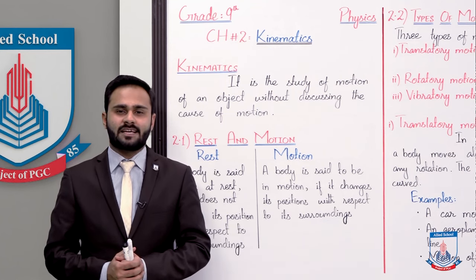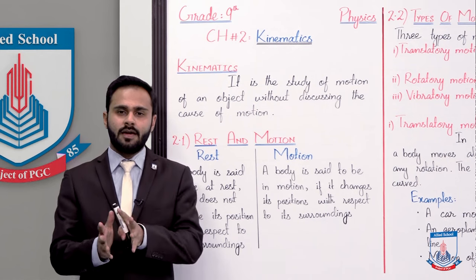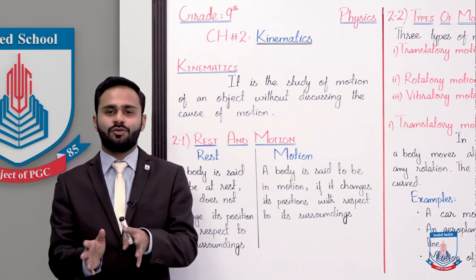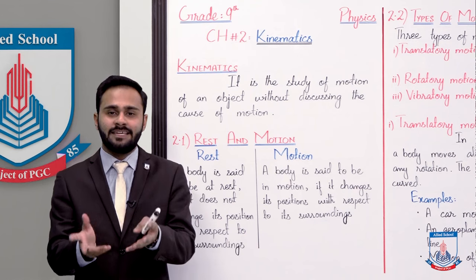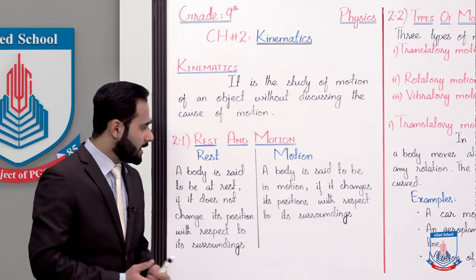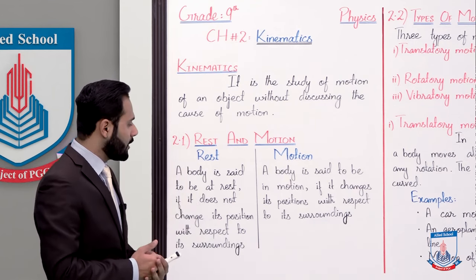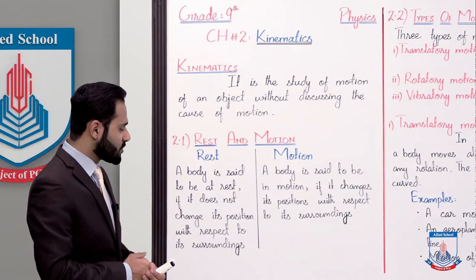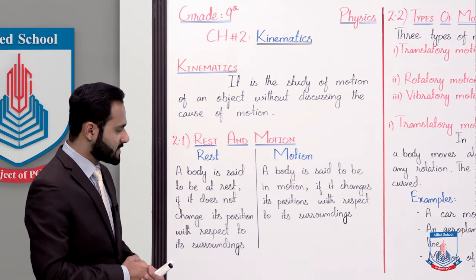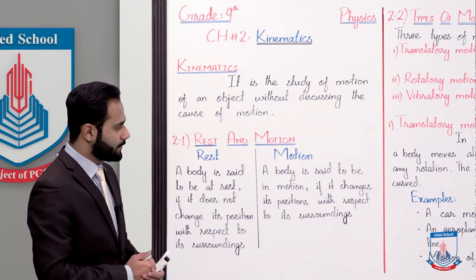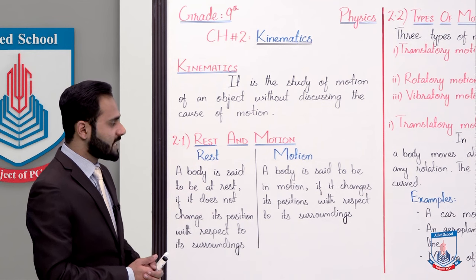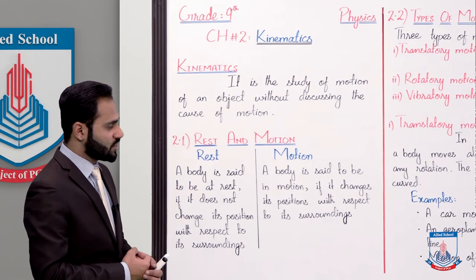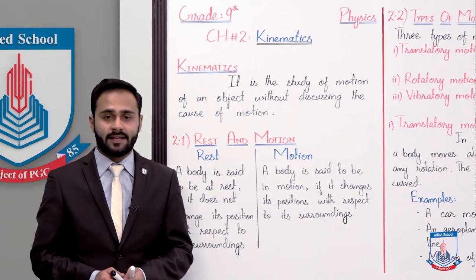So first of all hum discuss karte hain ki ek body rest mein hoti hai ya ek body motion mein hoti hai. A body is said to be at rest if it does not change its position with respect to its surroundings. And motion — a body is said to be in motion if it changes its position with respect to its surroundings.